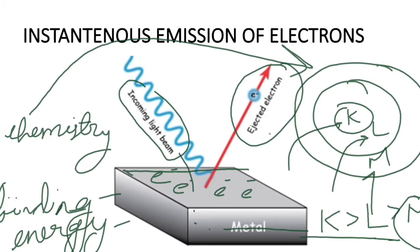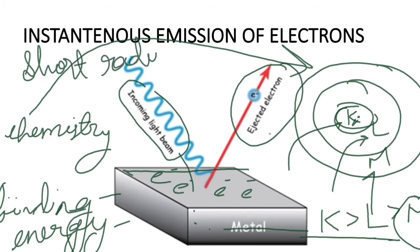The binding energy is strong because near the nucleus the electron is tightly bound — the attraction is deep. The smaller the radius (shorter distance), the greater the binding energy power. For M shell, the radius is the largest, meaning the distance is greatest, and because of this greater distance, the binding energy is less. So ejection of electron happens from the M shell. This topic is now 100% clear — if you have any doubts, please comment.